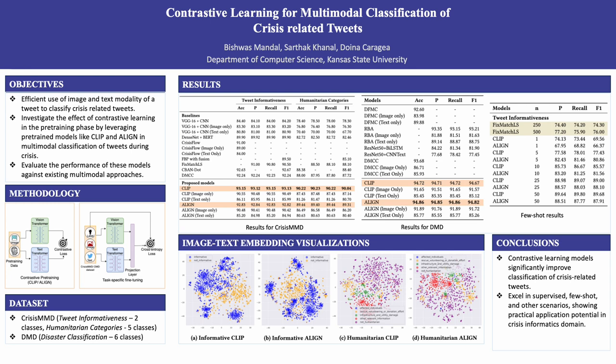Our method is structured into two phases: initially contrastive pre-training, which is followed by task-specific fine-tuning. We directly use the pre-trained CLIP and ALIGN models, allowing us not to go through the expensive pre-training phase. During the fine-tuning phase, we concatenate the embeddings from both text and image encoders of the pre-trained models and pass it to a softmax layer for class prediction.